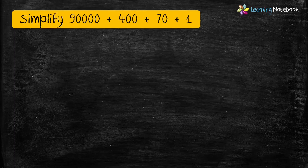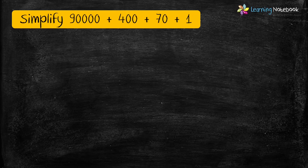Now let's solve one more question, but this time without actually adding the expanded form. The question is: simplify 90,000 plus 400 plus 70 plus 1. Let's start solving this expanded form from the right.